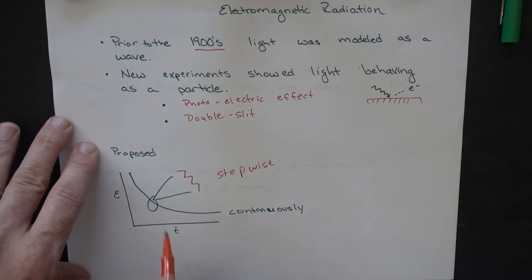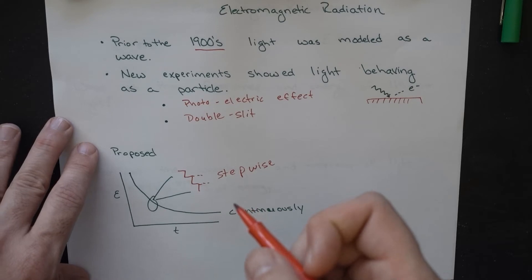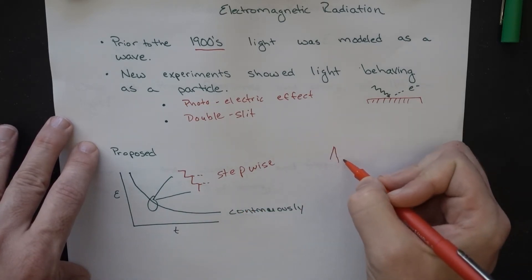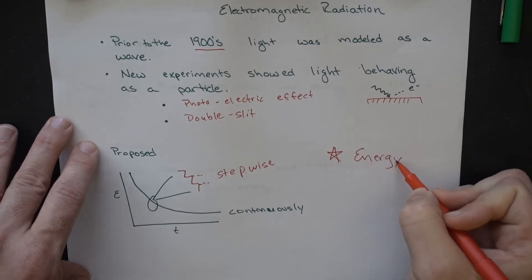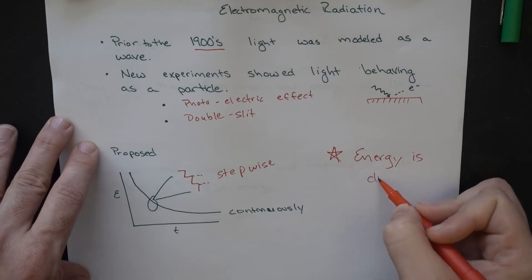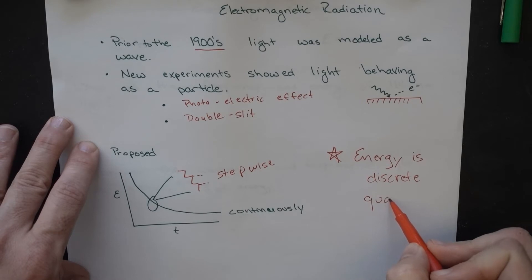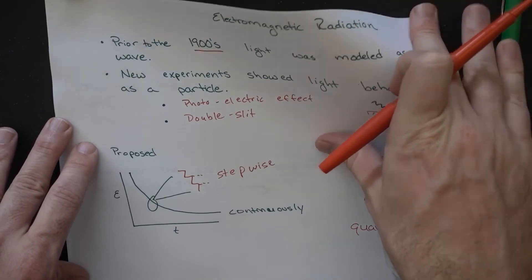Energy was being given off in these very small steps. And this was something that was starting to be observed. The whole idea and the very principle thing for us to remember here is that energy is discrete, which means it comes in small packets, which we often refer to as quanta. Another thing we can say is that energy is quantized. That's an important concept for us to remember.